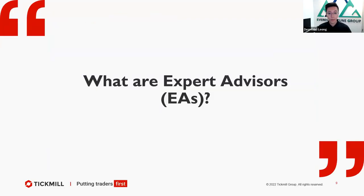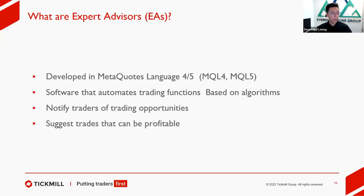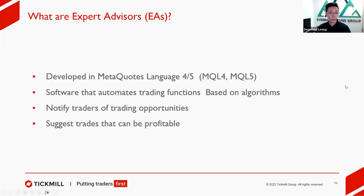Next, I'll be going through what are expert advisors — in short, EAs. EAs are developed in MetaCode's language 4 and 5 (MQL4 and MQL5), and it's software that automates trading functions based on algorithms. It notifies traders of trading opportunities and suggests trades that can be profitable. Basically, EAs are a more convenient way for traders that cannot spend a lot of time trading. Because if you were to trade manually, you have to spend quite some time learning about the markets, understanding candlesticks and trends. EAs make life easier in the sense that they automate everything.